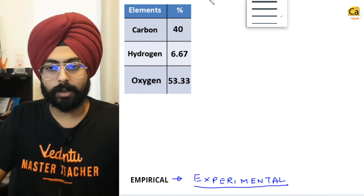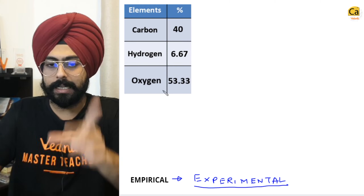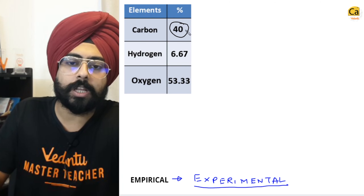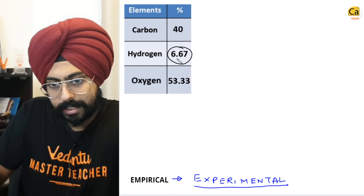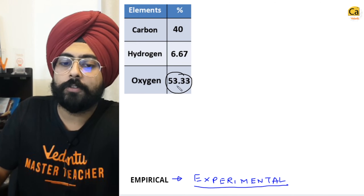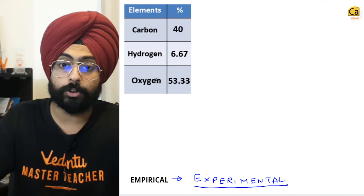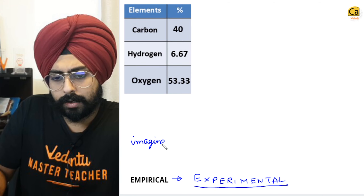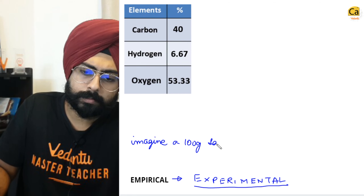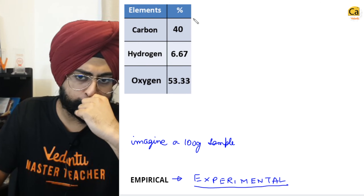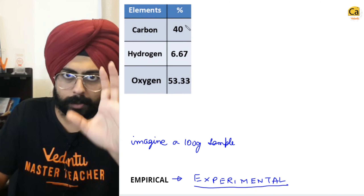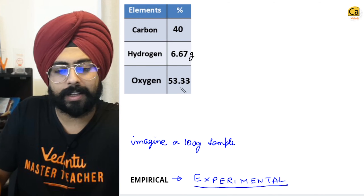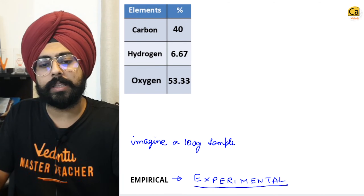A certain compound contains carbon, hydrogen, and oxygen. The percentage composition of the mass in that sample is: 40% carbon, 6.67% hydrogen, 53.33% oxygen. Imagine a 100 gram sample — so 40 grams is carbon, 6.67 grams is hydrogen, and 53.33 grams is oxygen.